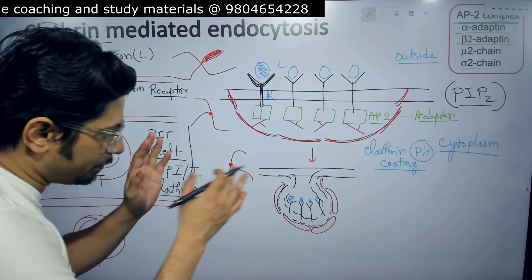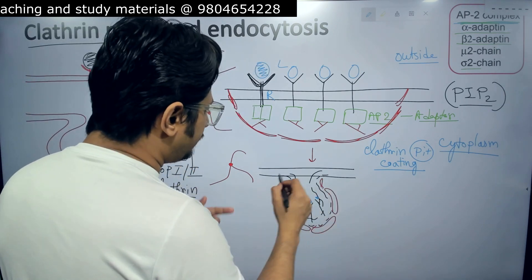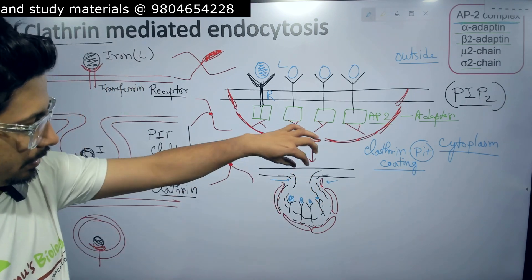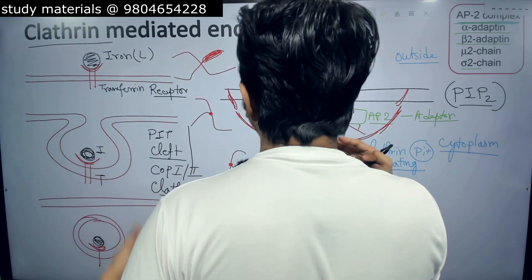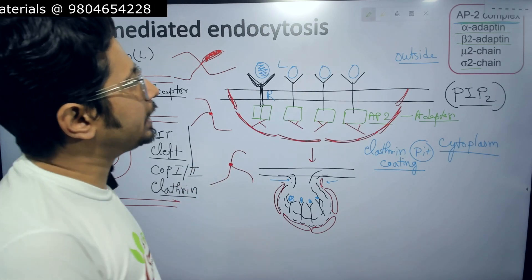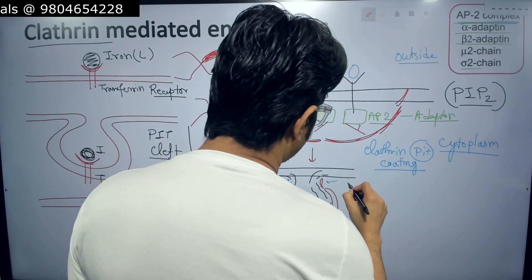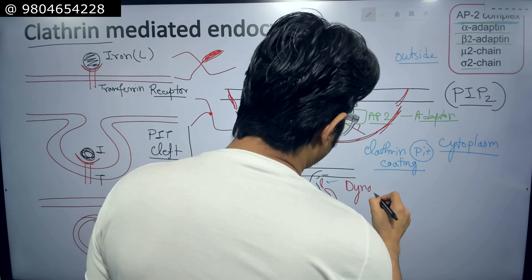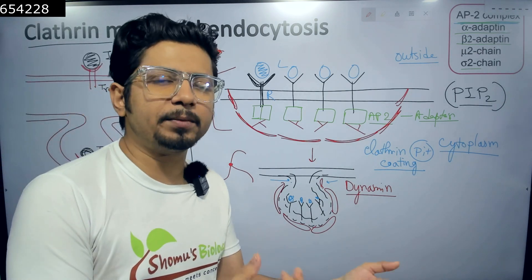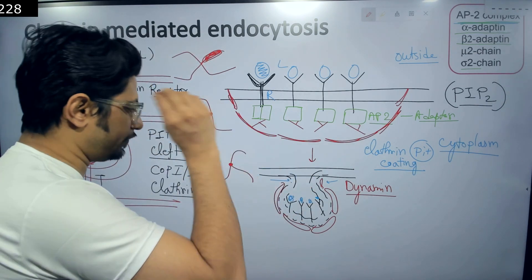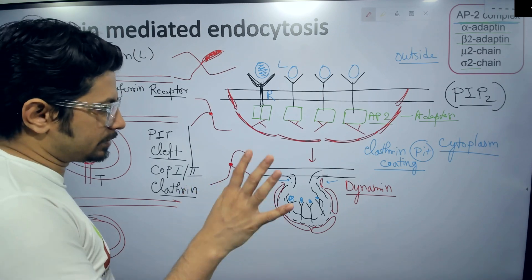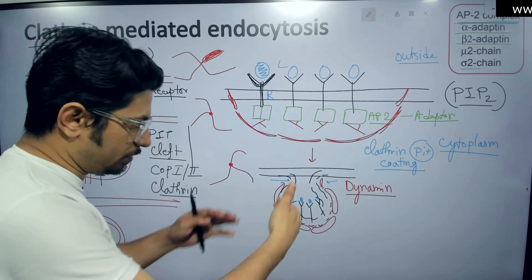To release the vesicle into the cytosol, the neck must be cut off. A protein known as dynamin — called a molecular scissor — has a scission function that cuts this neck of the vesicle, and the vesicle gets free into the cytoplasm. That's how the vesicle gets clipped out and is released.